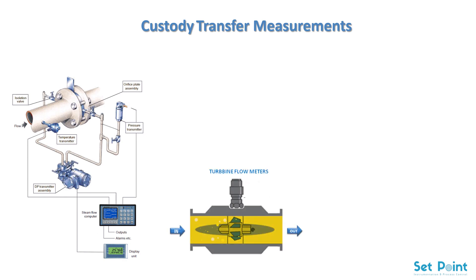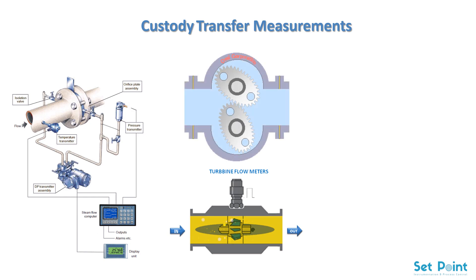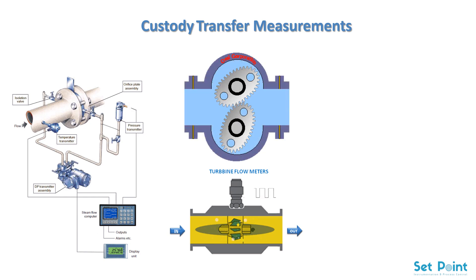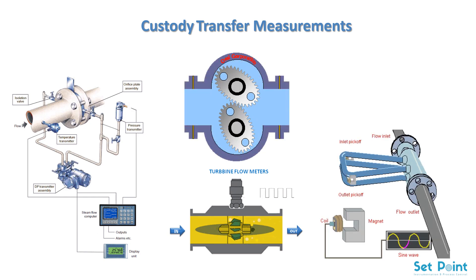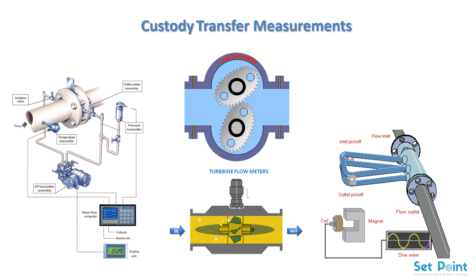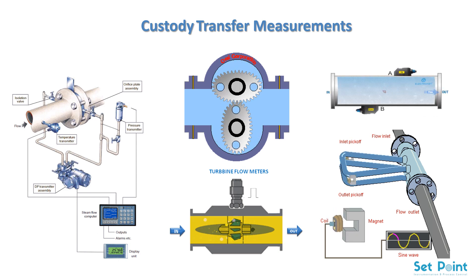The remaining four technologies are: turbine flow meters, positive displacement flow meters, Coriolis mass flow meters, and ultrasonic flow meters.